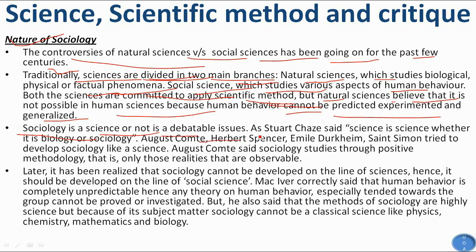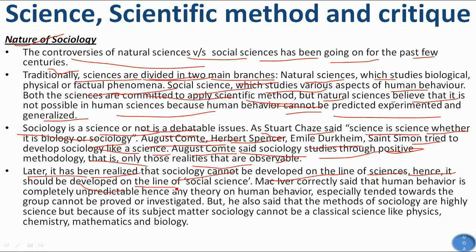Whether sociology is a science or not is a debatable issue. As Swatches says, 'science is science whether it is biology or sociology.' Auguste Comte, Herbert Spencer, Émile Durkheim, and Saint-Simon tried to develop sociology like a natural science. Auguste Comte said sociology studies through positive methodology — only those realities that are observable. Later, it was realized that sociology cannot be developed on the lines of natural sciences; hence it should be developed on the lines of social science.